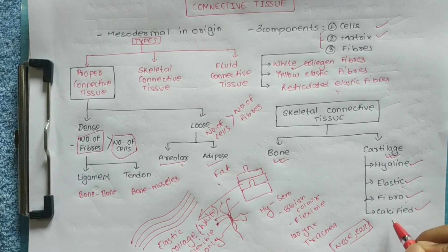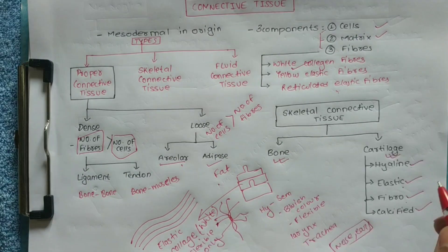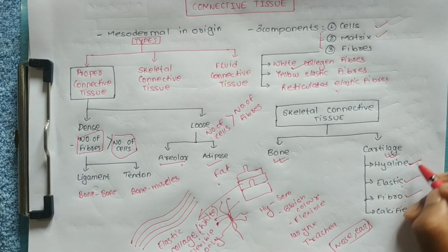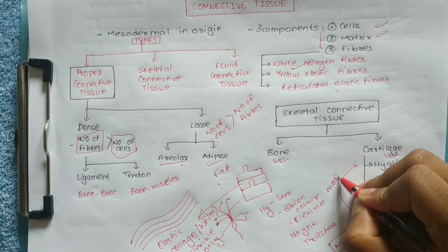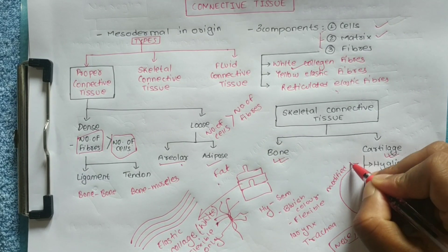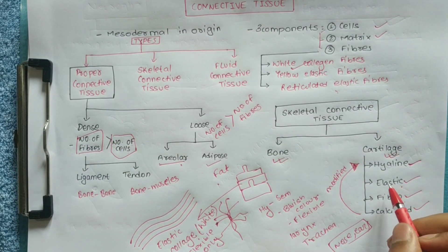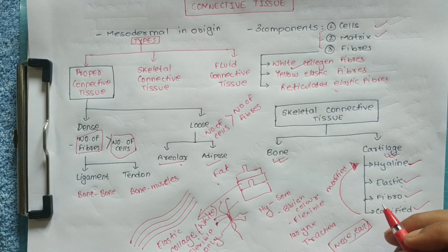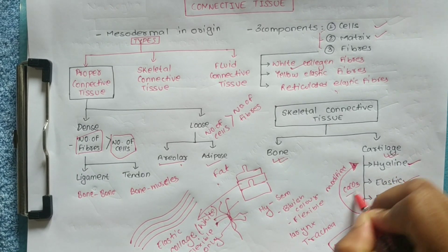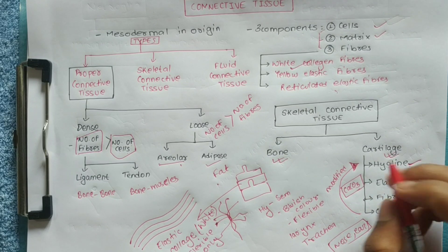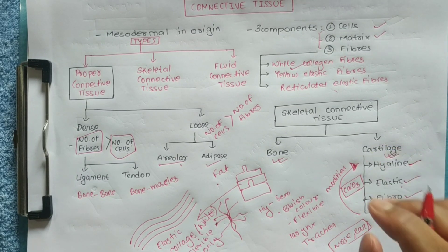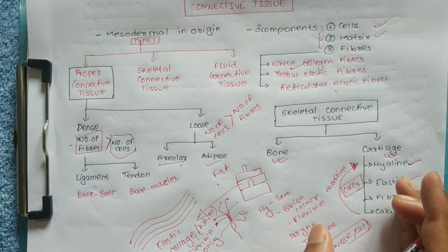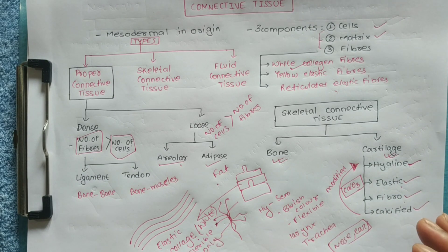Calcified cartilage is a modified form of hyaline cartilage. It contains calcium and CO3 (calcium carbonate). It is flexible but hardened due to calcium salt deposition.